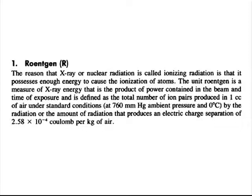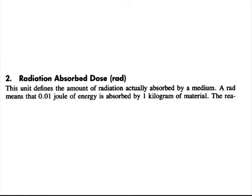Exposure alone is not sufficient — we also need to measure tissue absorption. Absorption means energy is deposited in the material. This is measured by the unit RAD, which stands for Radiation Absorbed Dose. This unit defines the amount of radiation actually absorbed by a medium. One RAD means that 0.01 joules of energy is absorbed by 1 kilogram of that material.